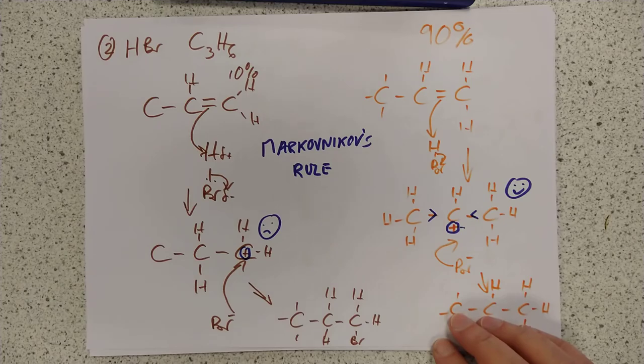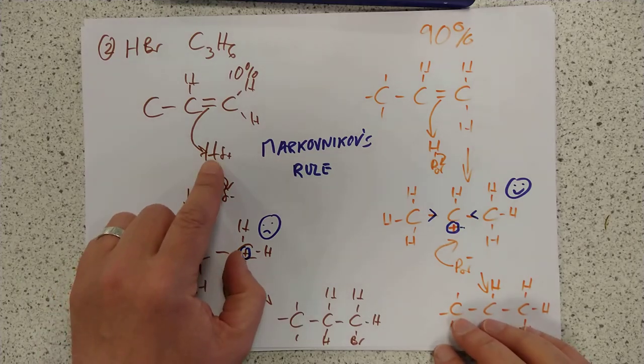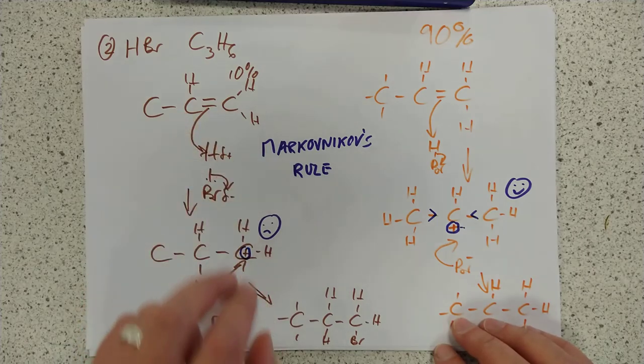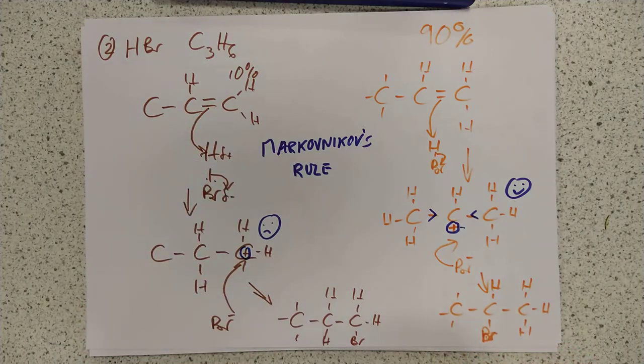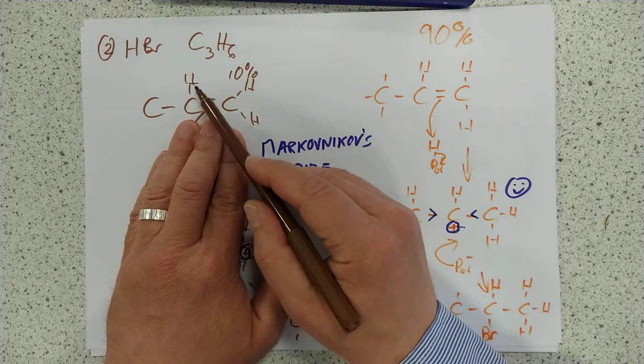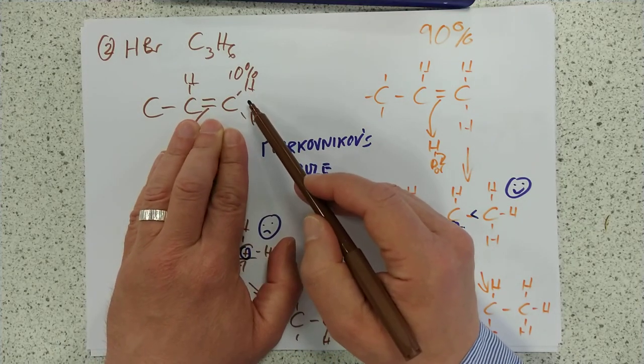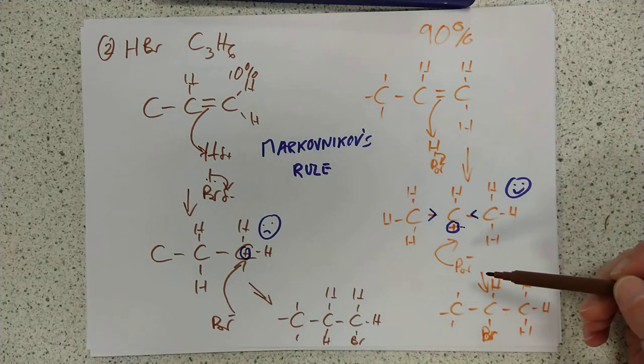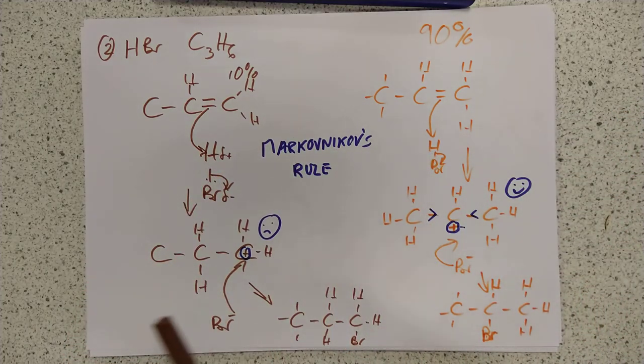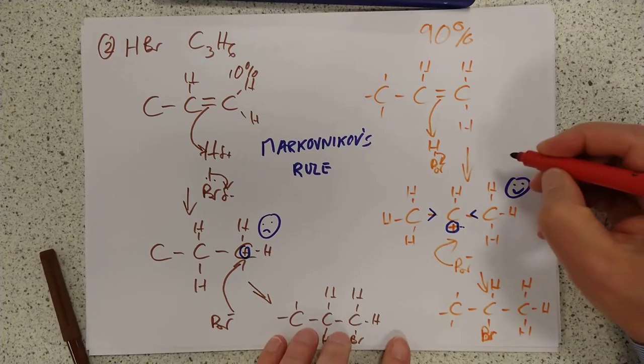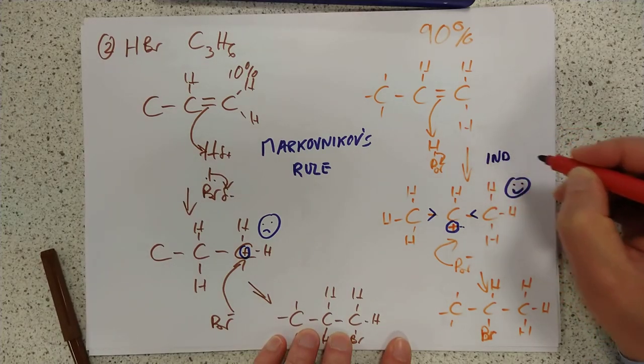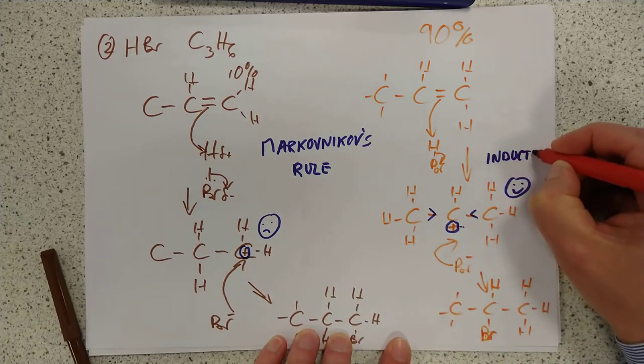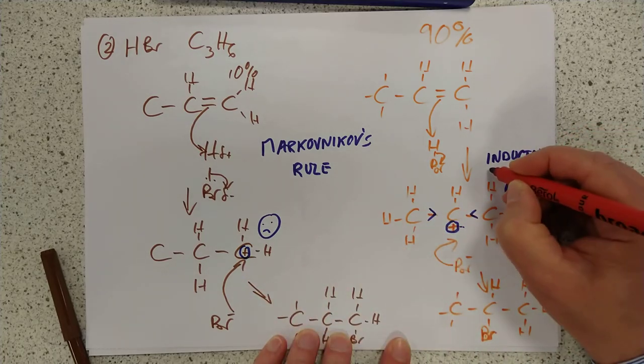Then we had Markovnikov's rule when it applies to adding hydrogen halides in general to asymmetric alkenes. The SQA quotes as the hydrogen ends up being bonded to the carbon that's already got most hydrogens on it, which is probably the most clumsy wording ever. In other words, this carbon here has one hydrogen, this carbon here had two, so this hydrogen is going to end up joining to that carbon. But here is the why. Inductive stabilization is why that happens. Because the secondary carbocation is more stable than the primary carbocation, which means it survives for longer.